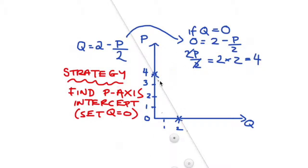So the only difference between the two examples 1 and 2 is just how the curve was represented algebraically. In the first example we had P isolated on the left-hand side, and in the second we had Q isolated on the left-hand side.